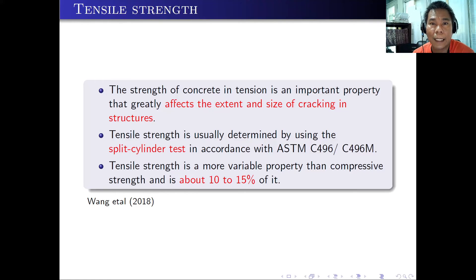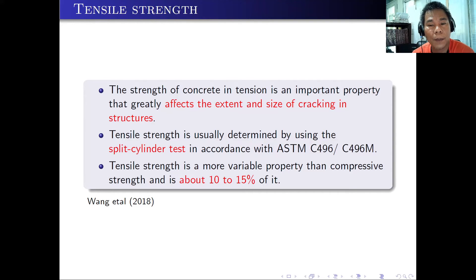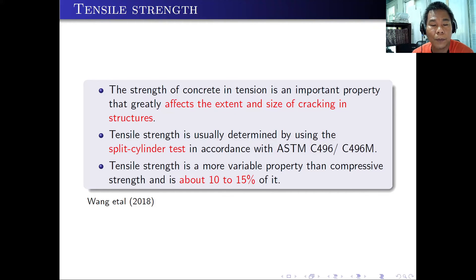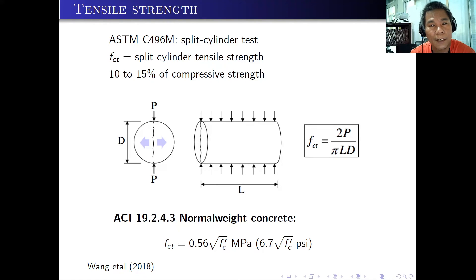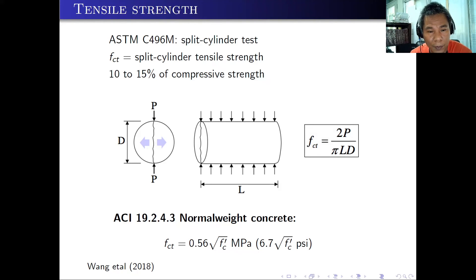Aside from the compressive strength of concrete, we need to know about the tensile strength. The strength of concrete in tension is an important property that greatly affects the extent and size of cracking in structures. Tensile strength is usually determined by using the split cylinder test in accordance with ASTM C496. Tensile strength is a more variable property than compressive strength, and note that it is about 10 to 15% of the compressive strength.